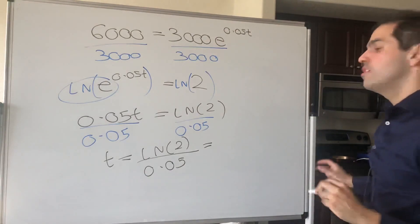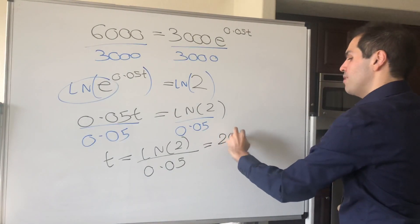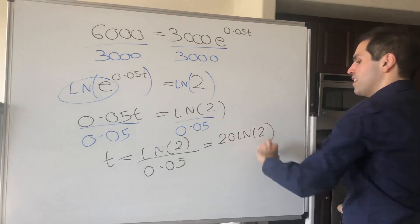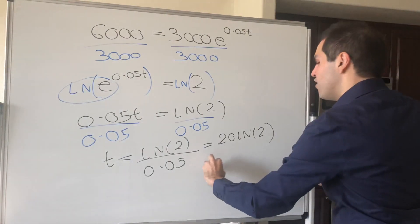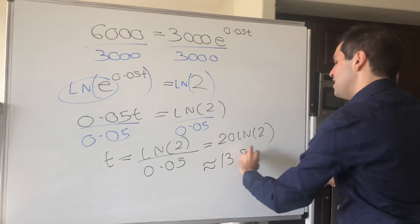But dividing by 0.05 is the same as multiplying by 20, so we get 20 LN of 2, which gives you roughly 13.86 years.